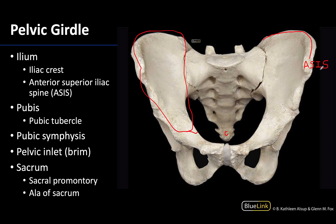Some of the abdominal muscles have an attachment here, as well as the inguinal ligament, or the floor of the inguinal canal. The inguinal ligament extends from the ASIS all the way to the pubic tubercle, which is right here. That's the pubic tubercle — you can see it really nicely over here as well. It's a fairly prominent bump on the superior portion of the pubic bones. This line gives you an image of the general location of the inguinal canal.